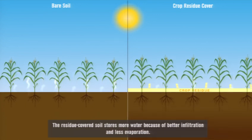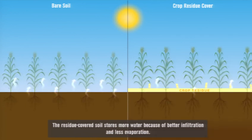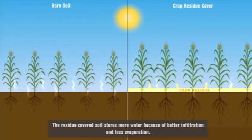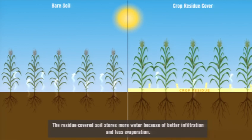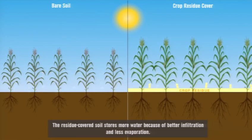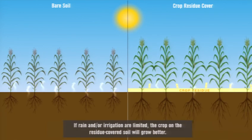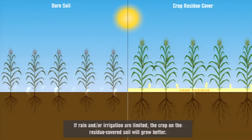In summary, the residue-covered soil stores more water than the bare soil because of better infiltration of water into the soil and less evaporation of water from the soil surface. If rain and/or irrigation are limited, the crop on the residue-covered soil will grow and yield better than the crop on the bare soil.